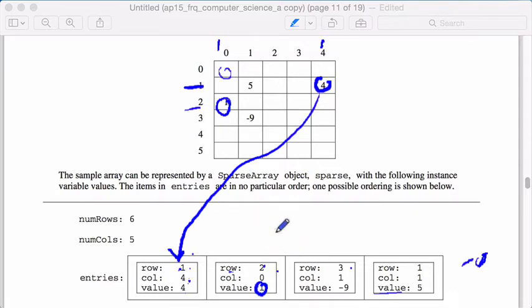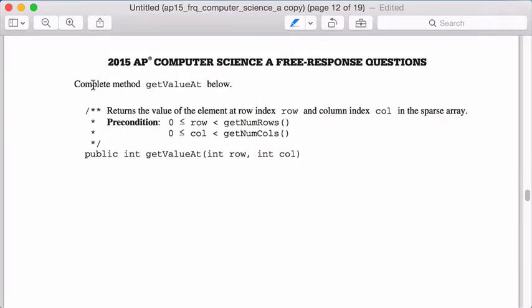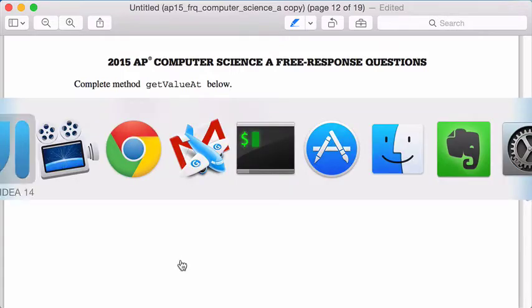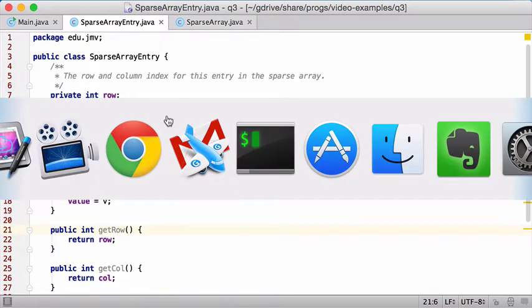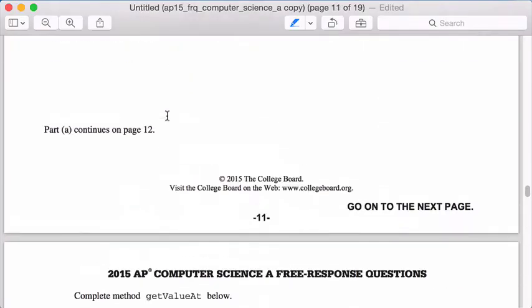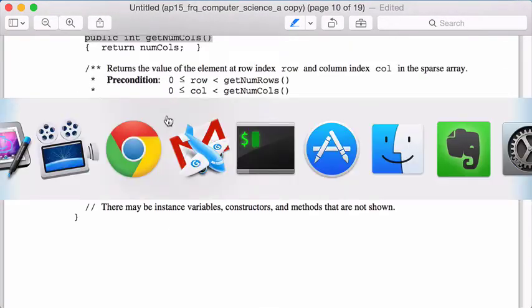So that's how a sparse array is implemented, and that's actually what question A, which we're doing now, is asking us to do. Getting back to here, the first thing we have to implement is this method getValue. The getValue method is gonna ask us to, I give it a row and a column and I need to return the value.